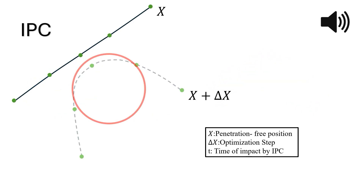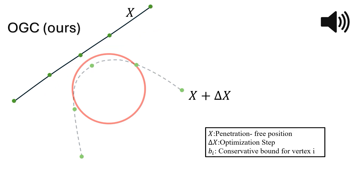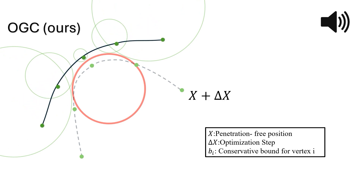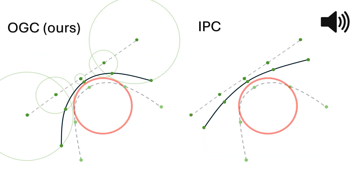Additionally, IPC truncates the optimization step at the earliest collision, forcing all vertices to take small steps even those far from contact. Our method, OGC, prevents penetration by computing conservative bounds for each vertex. Vertices far from collision can take larger steps even if others are near obstacles, avoiding costly continuous collision detection and accelerating convergence compared to IPC.